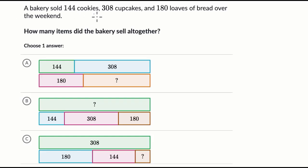We're told a bakery sold 144 cookies, 308 cupcakes, and 180 loaves of bread over the weekend. How many items did the bakery sell all together?